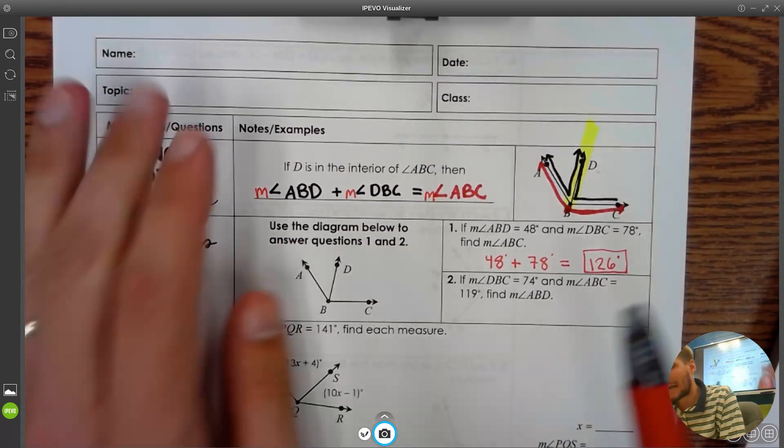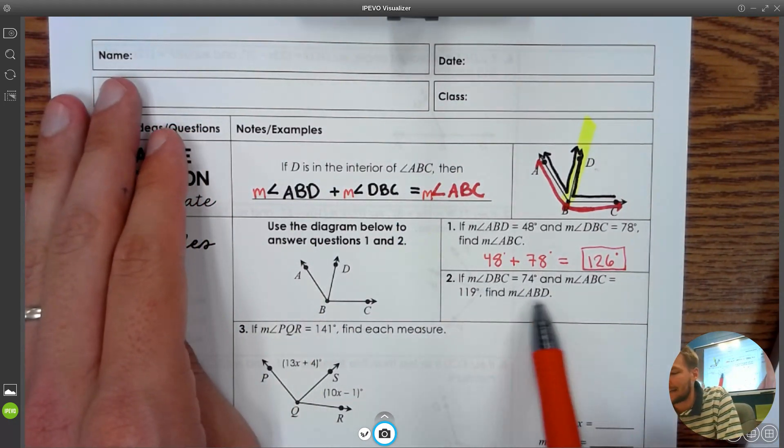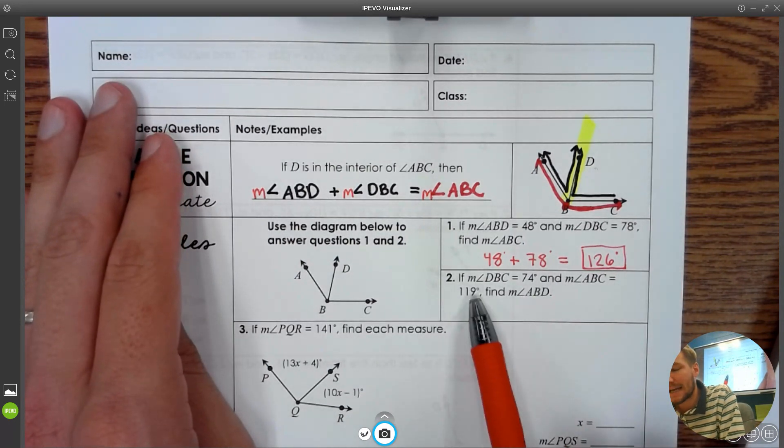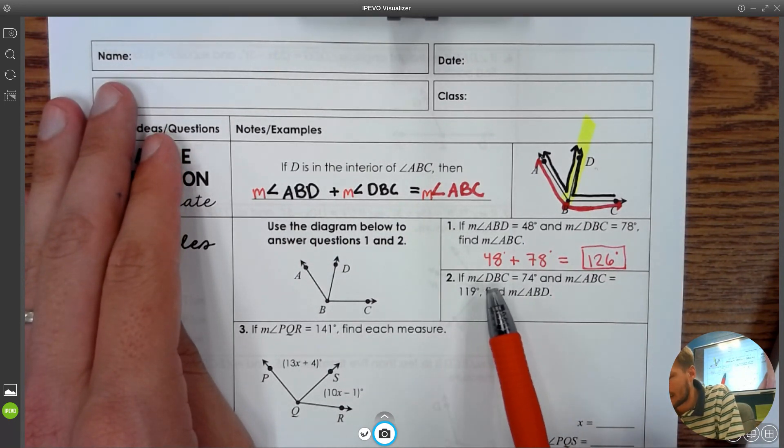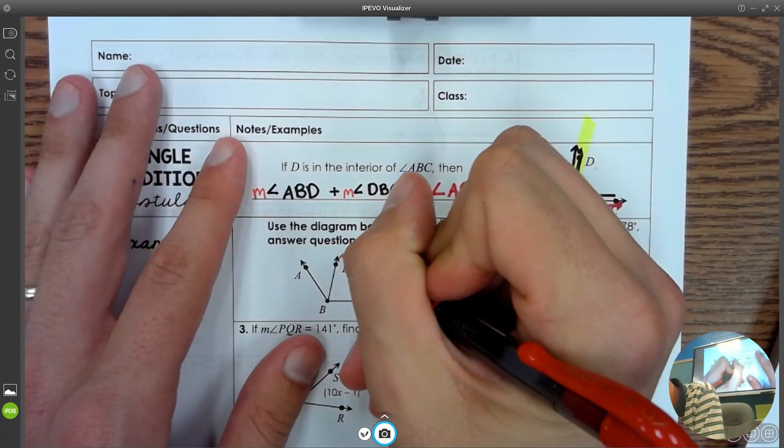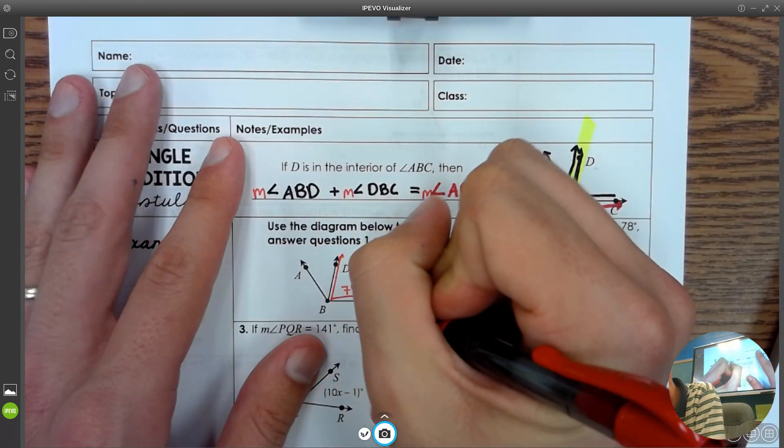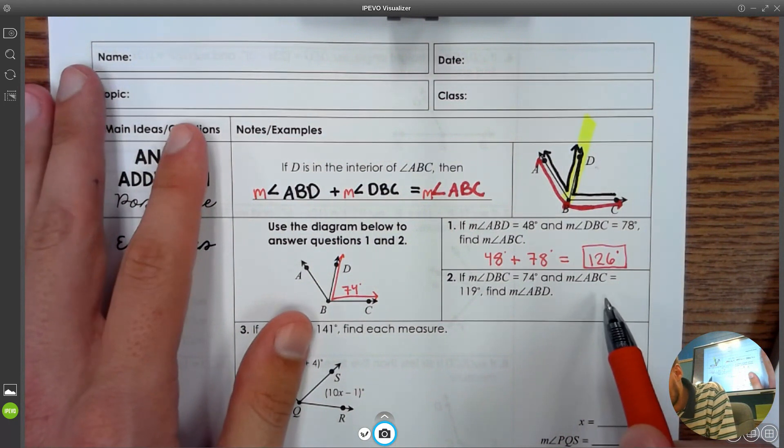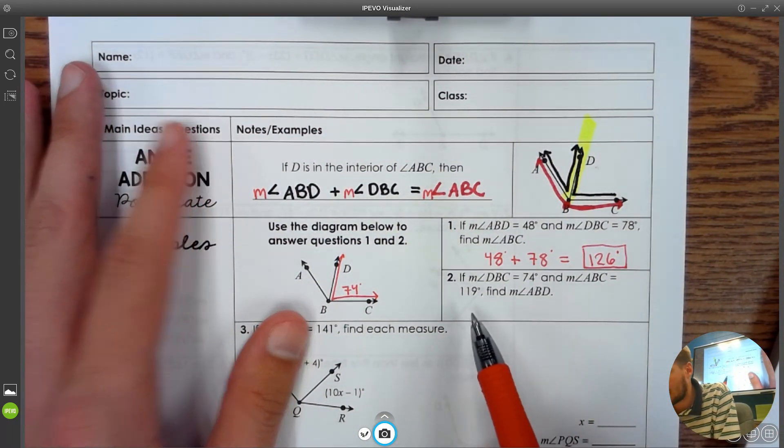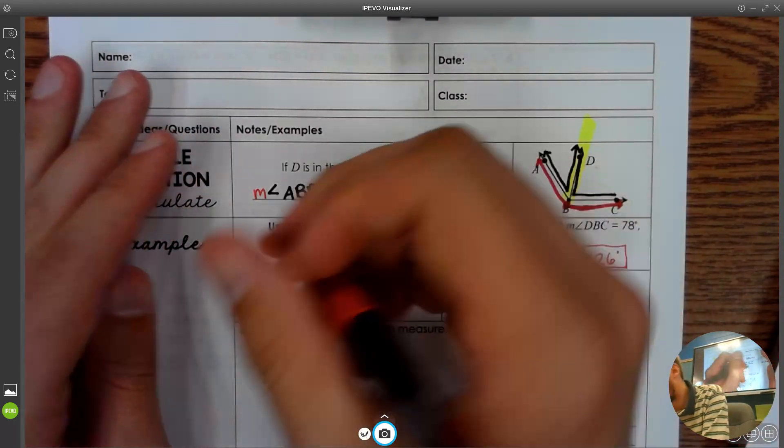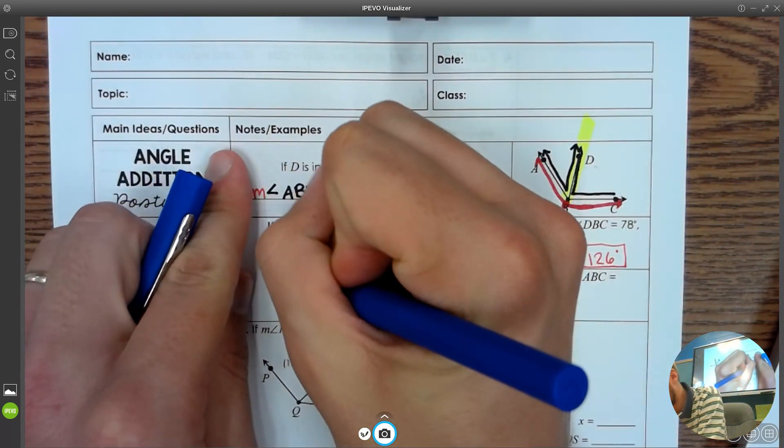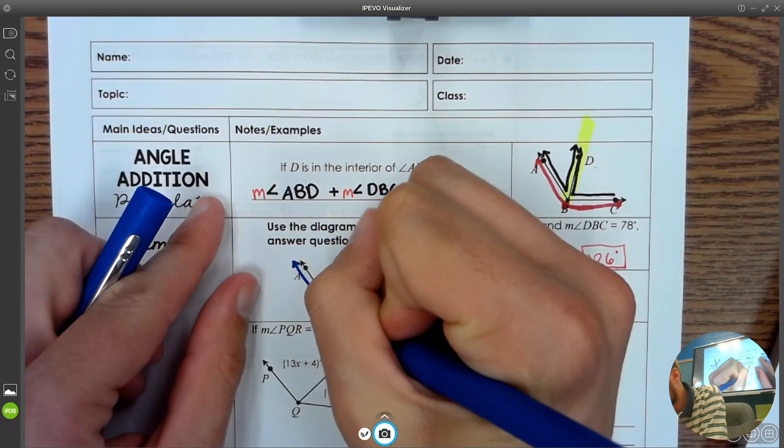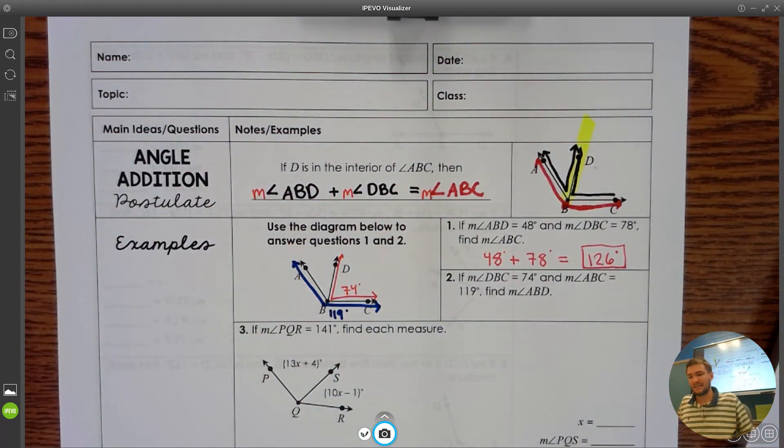Talking about the next one, we got something a little bit more interesting. Again, this is exactly like the segment addition notes. For this second piece, it says DBC, that's this part over here. DBC is worth 74 degrees. But then it says that m∠ABC is 119. That's the whole thing. ABC is 119. So this is a little bit different. Are we going to be adding these two numbers together? No. Because this isn't adding the two small parts. This needs to be taking the big part. And what are we going to do with it? Subtract.